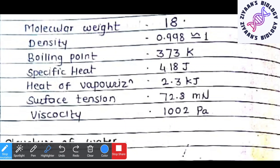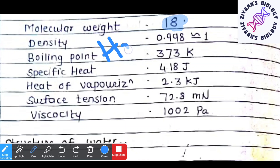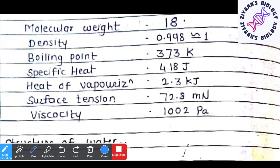The molecular weight of water is 18. Looking at the chemical structure, water is H2O. The molecular weight of hydrogen is 1, and we have 2 hydrogen atoms, giving us 2. The molecular weight of oxygen is 16. So 2 plus 16 equals 18.